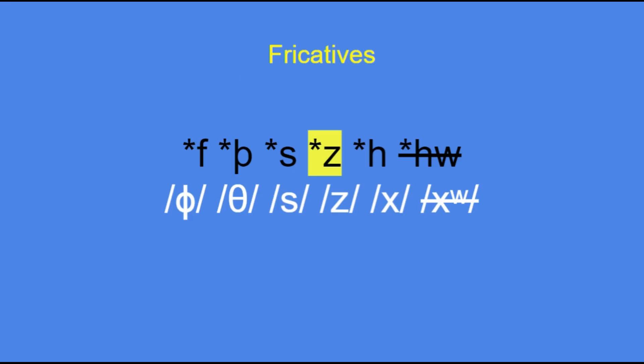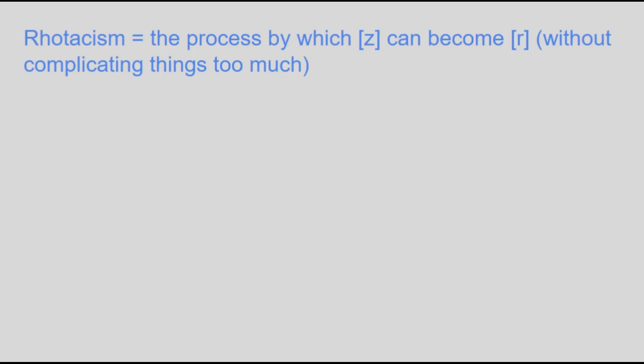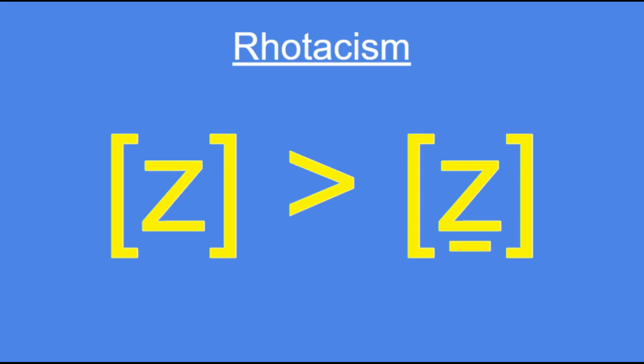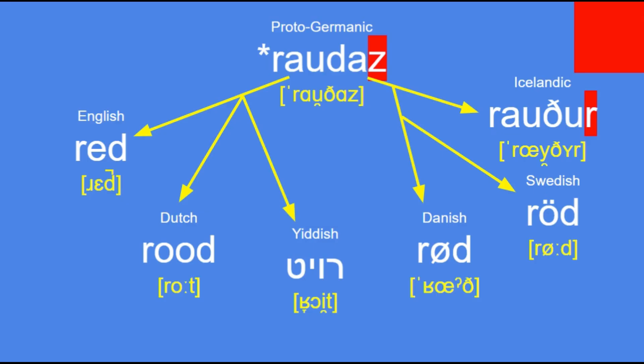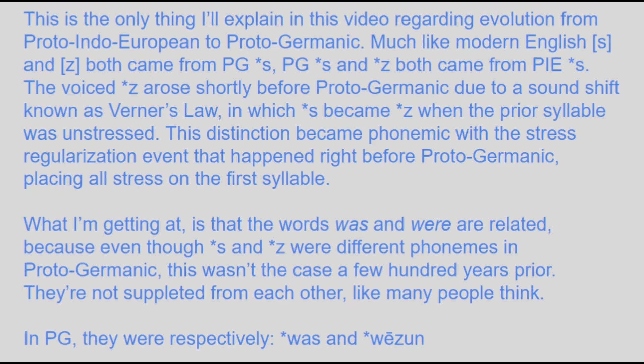Finally, we have the one voiced fricative in Proto-Germanic, z, which isn't going to stay around. In a process known as rhotacism, Proto-Germanic z first became a further-back fricative and then r. If you were wondering why Proto-Germanic words ending with z became r in Icelandic in some earlier examples, this is why. It has far-reaching effects in the North Germanic languages, but for English it at least explains the difference between was and were — those being waz and wēzun in Proto-Germanic respectively.